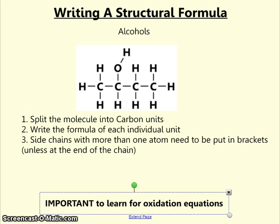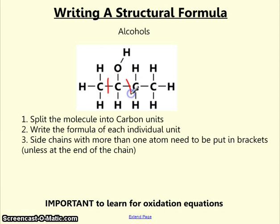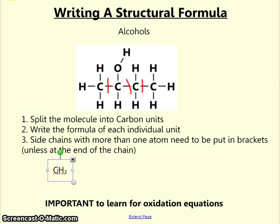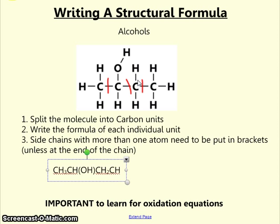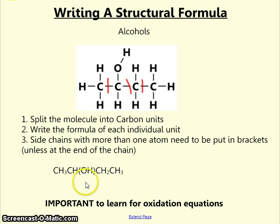To gain full marks, you have to use structural formulae. We take the same process as before: split the longest carbon chain into individual units. Starting with CH3, the second carbon has a CH on it, but it also has an OH group. Because the alcohol group, written as OH, has more than one atom in it, we put it in brackets to show it is not part of the carbon chain. Then we continue with CH2 and CH3. That is the way to write butan-2-ol.